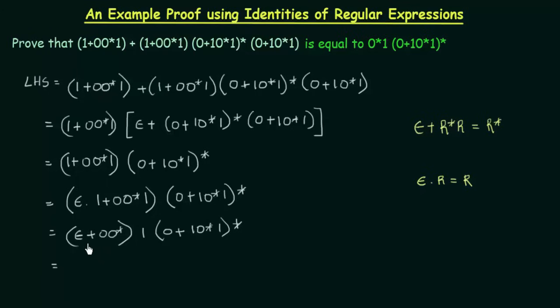And now, this one, if you look at this, this again follows this identity. Epsilon + R* R, where R is 0 over here. So how can I write this?